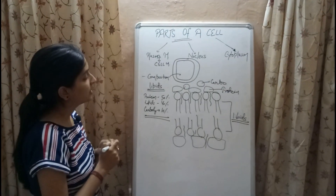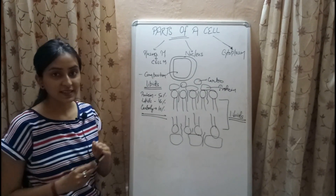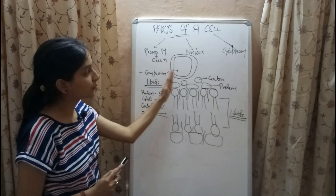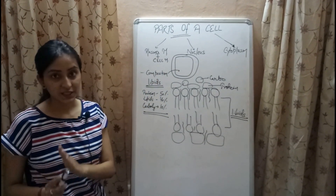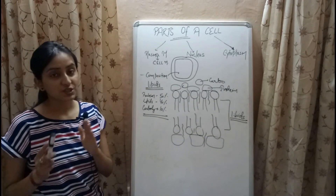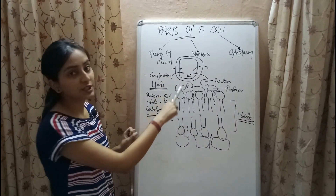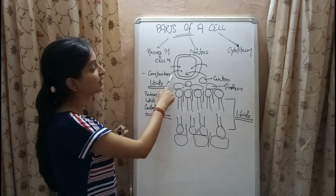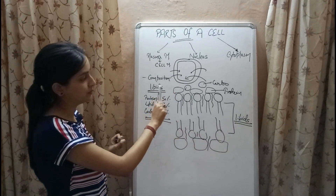Now coming to the functions of the plasma membrane — since the plasma membrane is the covering of the cell, it is protective in nature. It determines the shape of the cell and is responsible for determining which solutes will enter or exit across the plasma membrane.